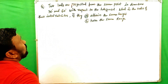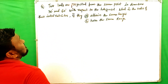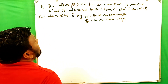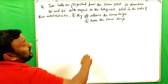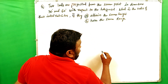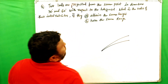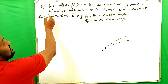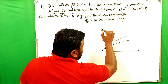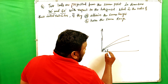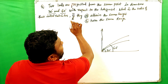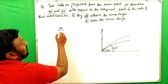Now the problem: Two balls are projected from the same point in directions 30 degrees and 60 degrees with respect to the horizontal. What is the ratio of their initial velocities if they attain (a) the same height and (b) the same range? So the first ball makes 30 degrees and the second makes 60 degrees with the horizontal. We need to find u1 by u2.